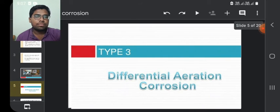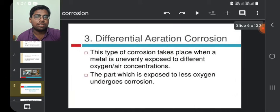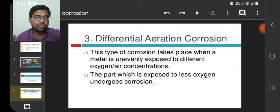Types of corrosion. My topic on the types of corrosion is differential aeration corrosion, which we will go on to waterline corrosion. Differential aeration corrosion. This type of corrosion takes place when a metal is unevenly exposed to different oxygen or air concentrations. The part which is exposed to less oxygen undergoes corrosion.